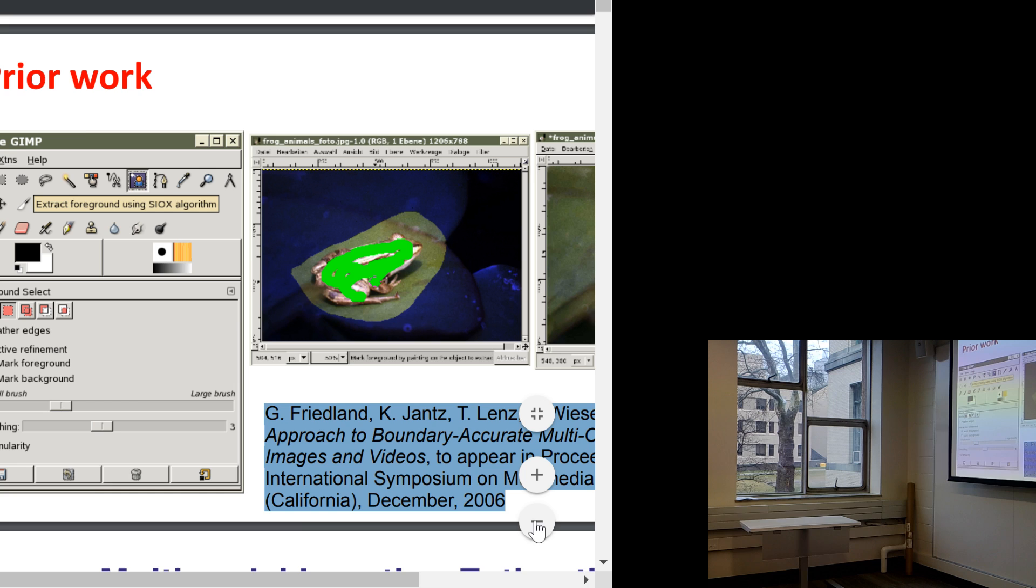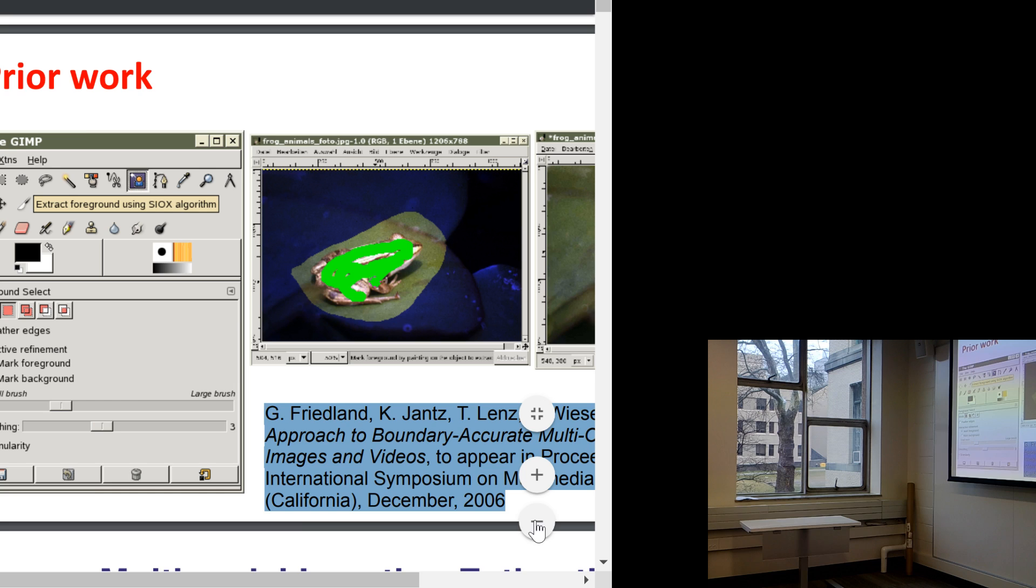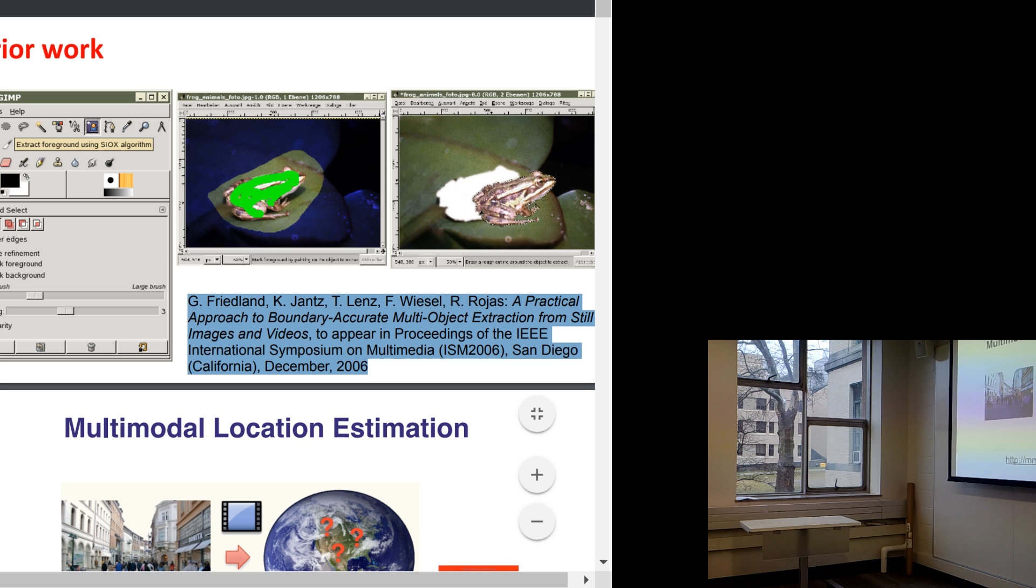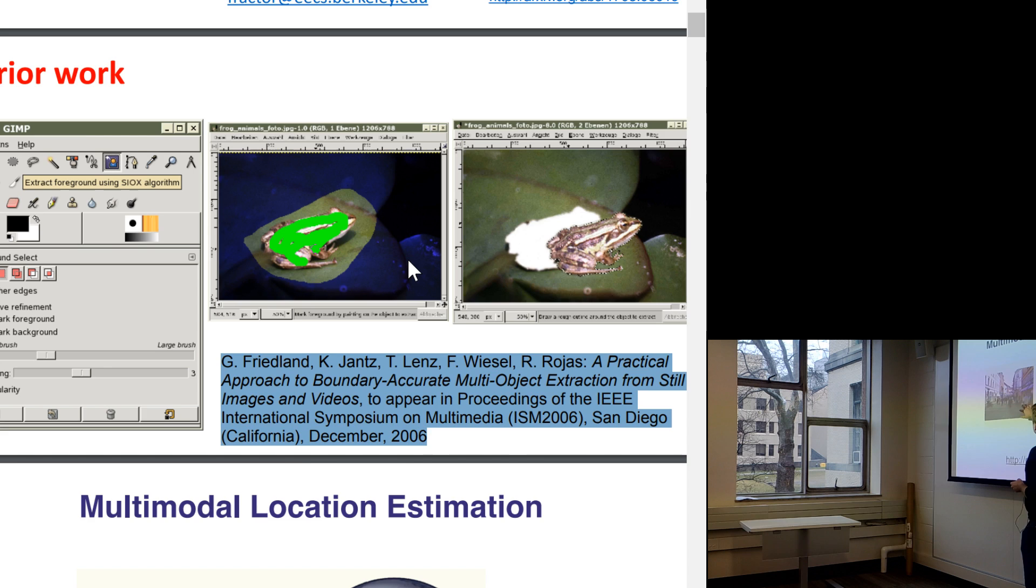A bunch of other stuff we did was, for example, we took Flickr videos and said, hey, where is this Flickr video, right? And so we analyzed audio, speech, and different audio signals and video signals together to basically come up with the geolocation of where the videos are. And we managed—and I think that's still the ballpark—to put about 15% of random Flickr videos within a 10-meter radius, which was way more than everybody expected at the time.